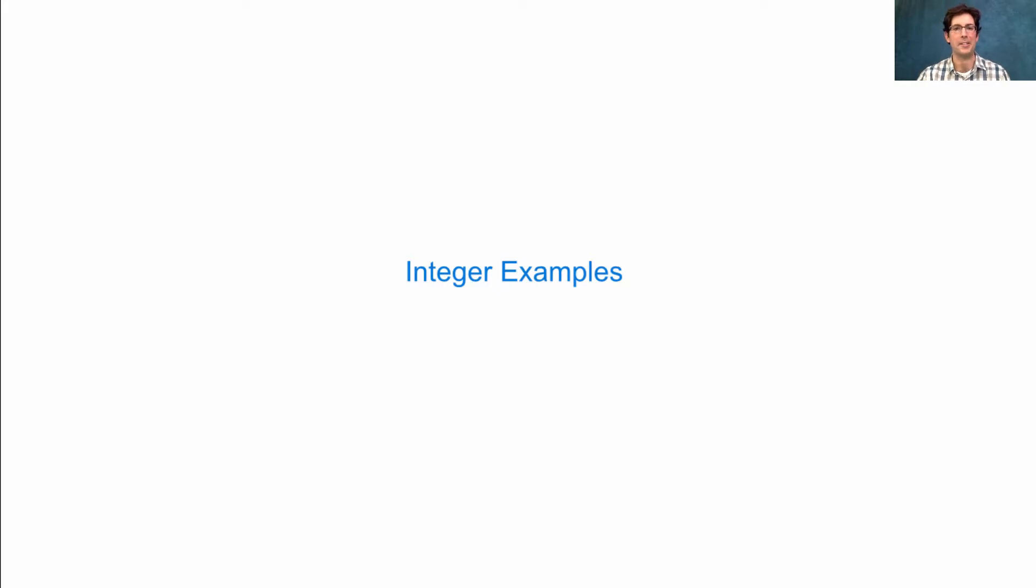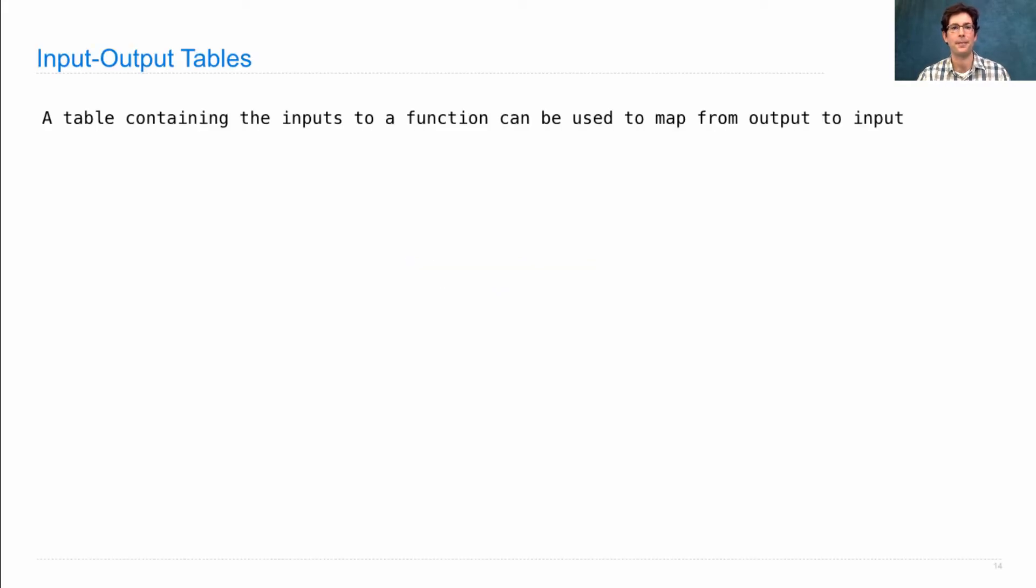Let's work through some numerical examples. One idea is that you can compute functions backwards. A table containing the inputs to a function can be used to map from output to input.